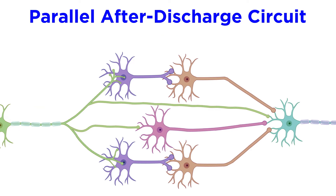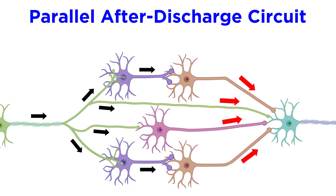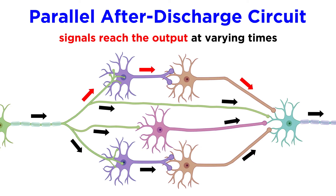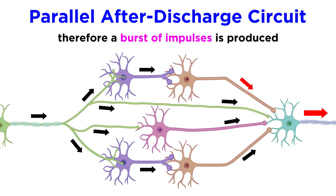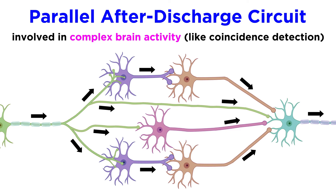Lastly, we can see a parallel after discharge circuit. This involves an input that diverges into parallel arrays that then converge on a single output. There is some variance in the time required for each individual signal to reach the output, so a burst of multiple impulses will be produced. These are involved in more complex brain activity, like coincidence detection.